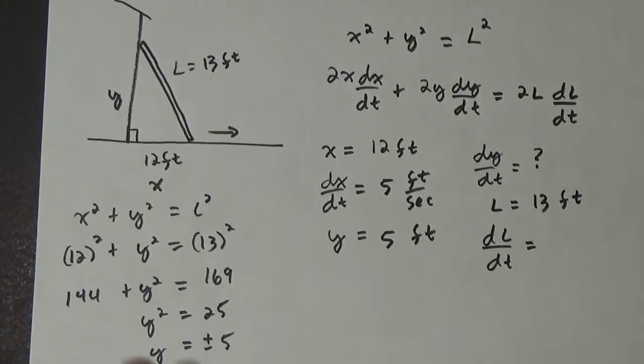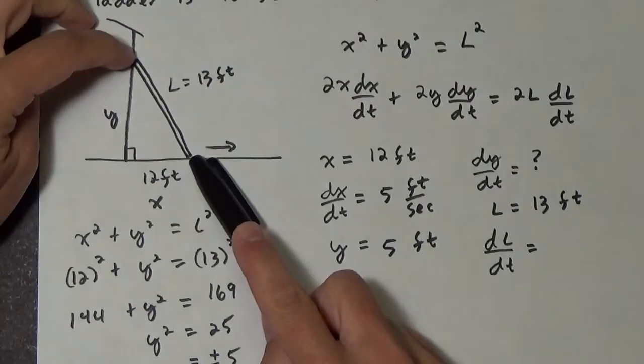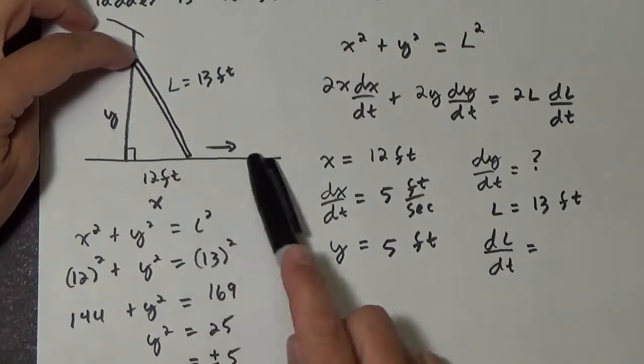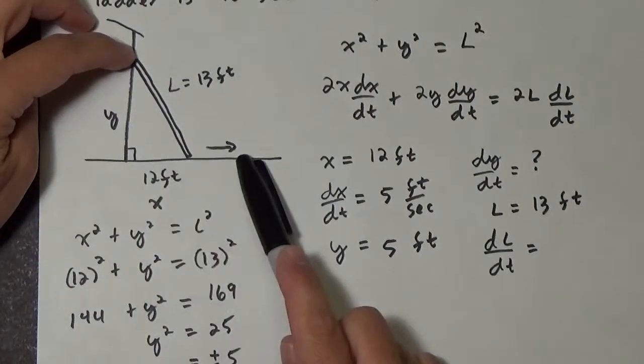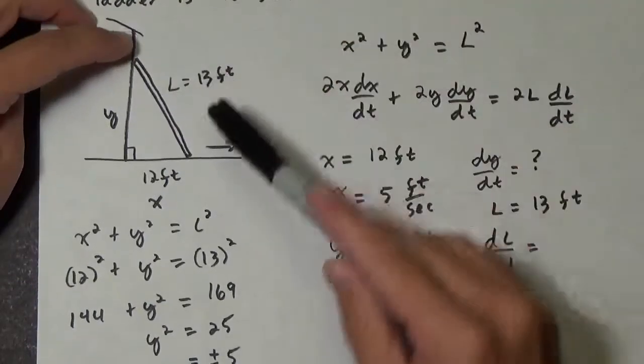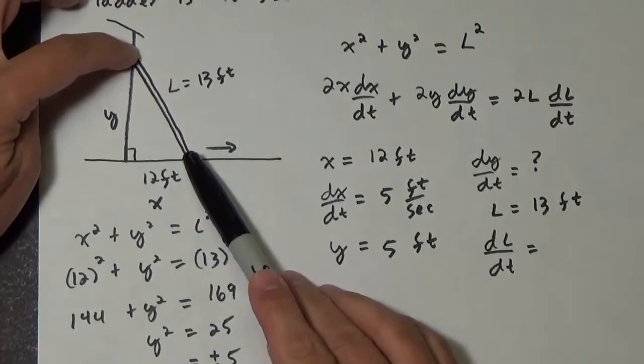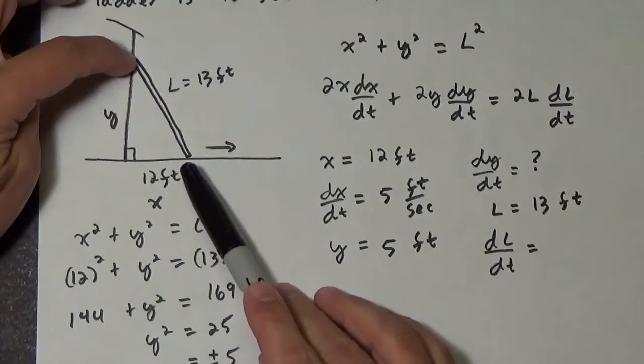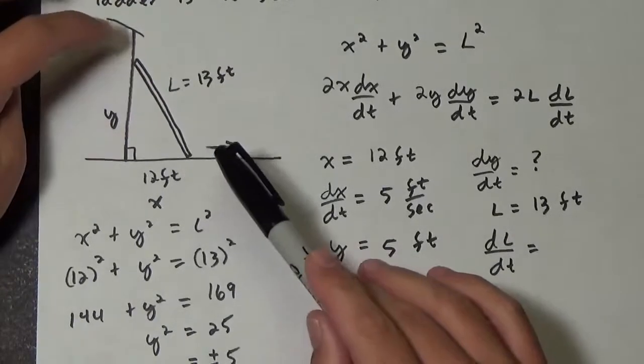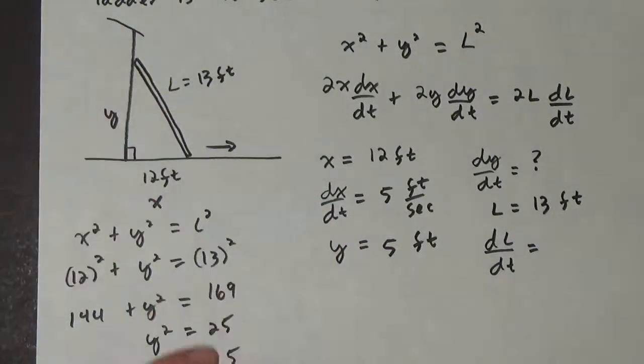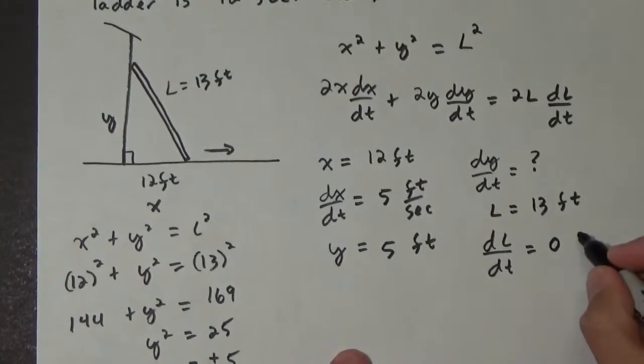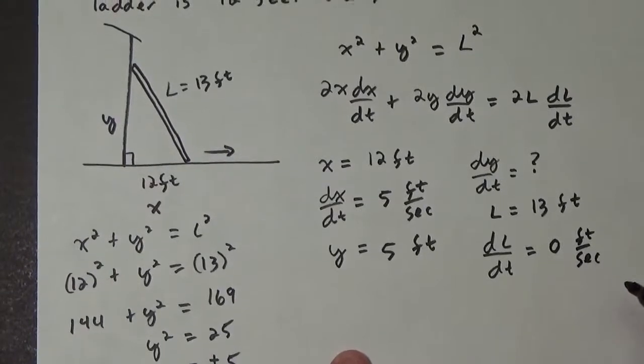Well, dL/dt is the rate that the length of the ladder is changing. So notice that dx/dt was the rate that the ladder was moving this way or this way. dy/dt is the rate that the ladder is moving up and down. So dL/dt is the rate that the length of the ladder is changing. Well, in this case, it doesn't say that the ladder is, you know, getting bigger or shrinking. It just stays the same at 13 feet. So dL/dt is actually going to be 0 feet per second.